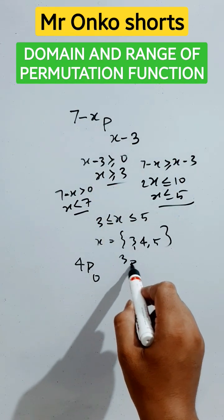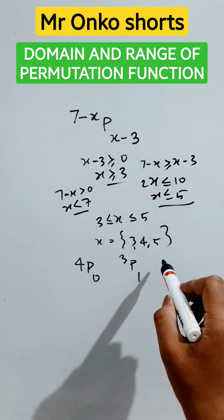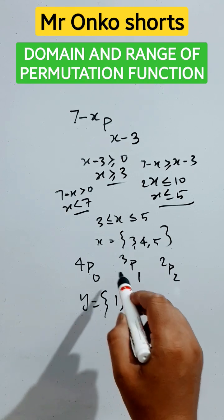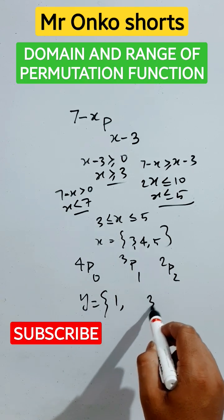We put four here, it will be 3P1. And if we put five here, it will be 2P2. So the range will be 4P0 is 1, 3P1 is 3, and 2P2 is...